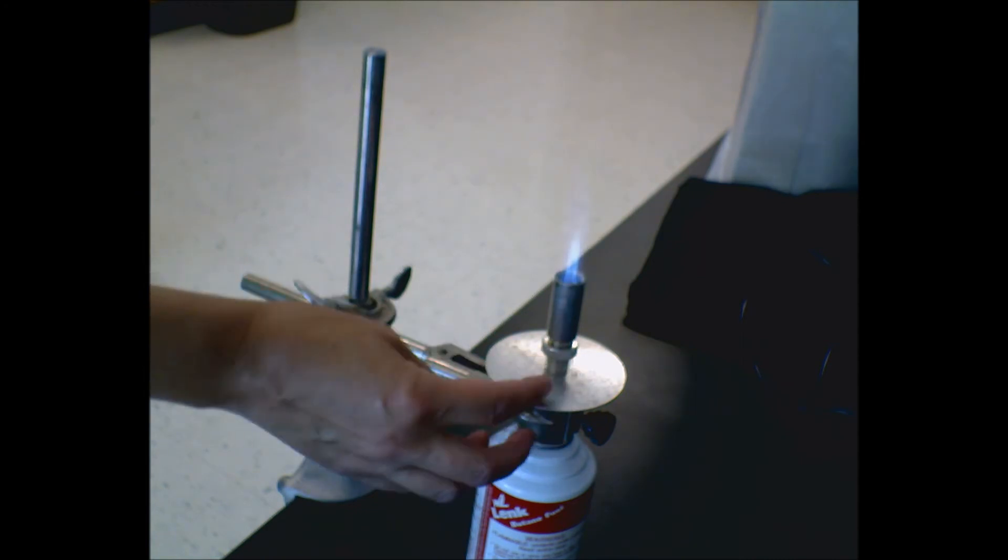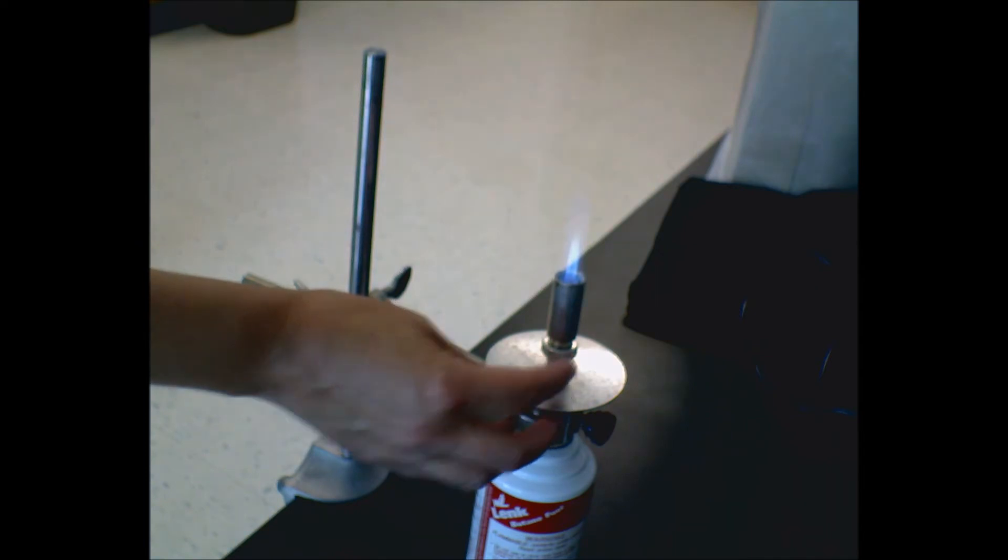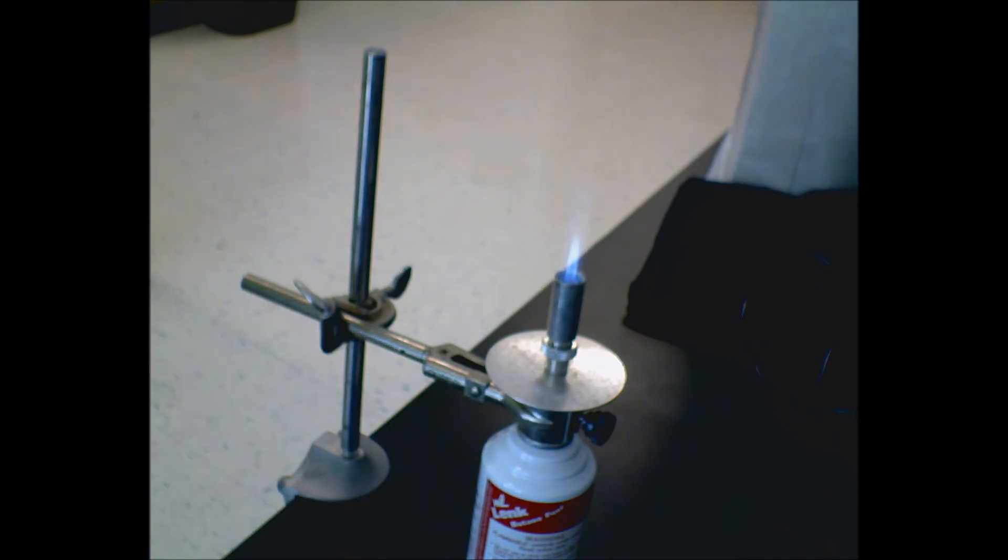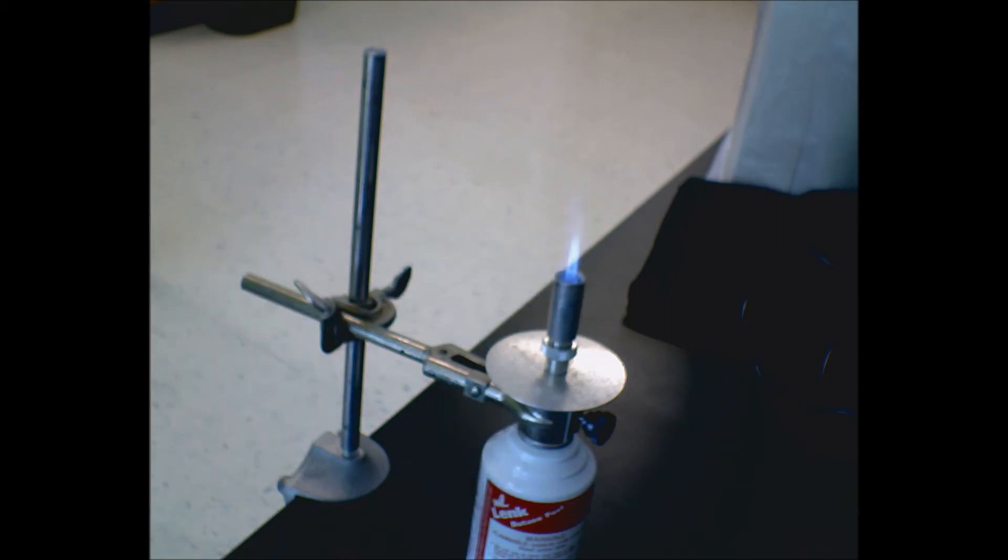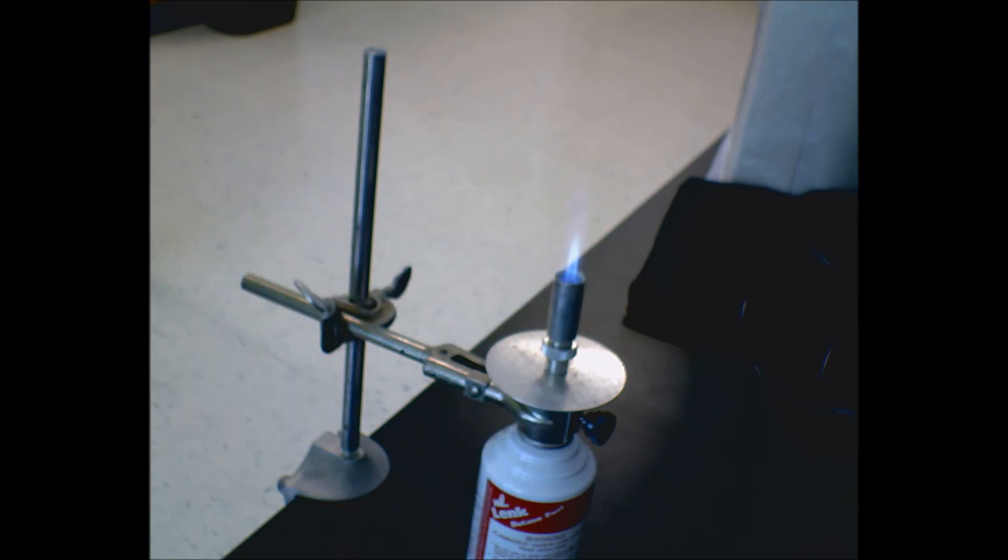This looks more like what you expect when you see a Bunsen burner. If you keep going down, you'll get that little roar. And that part, that cone right there, that's where it's really hot.